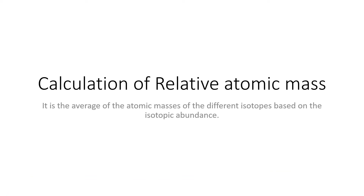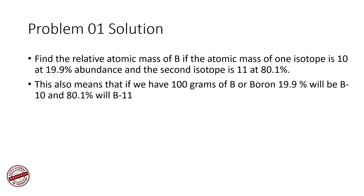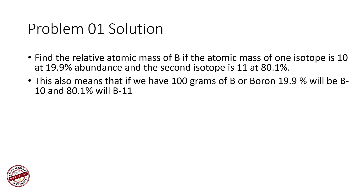Now we will look at calculation of relative atomic masses with two examples. Find the relative atomic mass of boron: one isotope has a mass number of 10 and a percentage composition of 19.9%, and the second isotope, boron-11, makes up 80.1%. If we have 100 grams of boron, boron-10 will be 19.9% and boron-11 will be 80.1%. The numbers 10 and 11 represent the mass numbers of the isotopes.